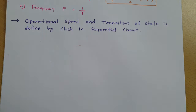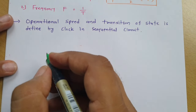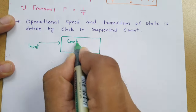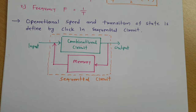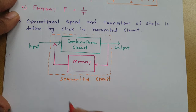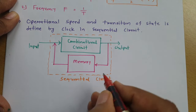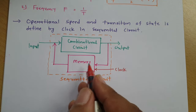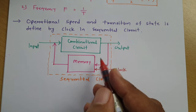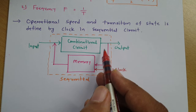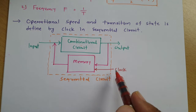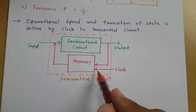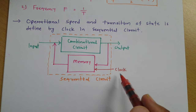To understand operational speed and transition of state in a sequential circuit, let me draw a basic block diagram of a sequential circuit, which I have already explained in my previous video. If you observe the basic block diagram of a sequential circuit, we have memory, and to trigger memory we need to have a clock. So with every memory used in a sequential circuit, we need triggering by a clock signal. When you give a clock signal to memory, the state of the circuit will change. The output of the circuit is defined by state, and that state changes with respect to the clock signal. So transition of state is happening by the clock signal, and operational speed and transition of state are defined by the clock signal.